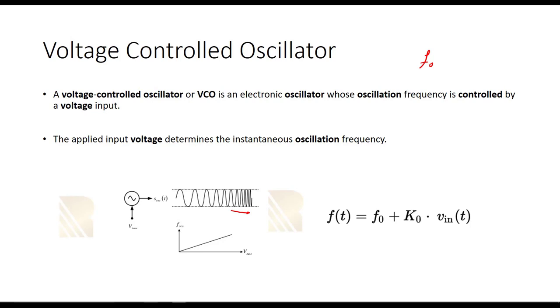If we show the formula of output frequency, f(t), the output frequency of VCO, is equal to f0, this is the default frequency, plus K0 times Vin(t). This is the control voltage as you see here. We also have K0, we call this gain. If we increase Vin, if we increase the voltage of VCO, we will be able to increase the output frequency and vice versa. We say the applied input voltage determines the instantaneous oscillation frequency.